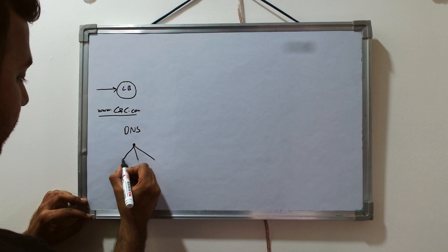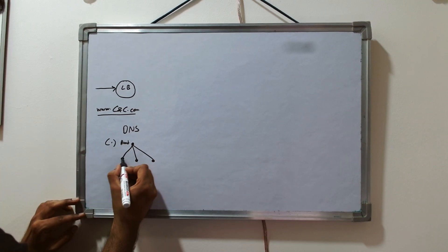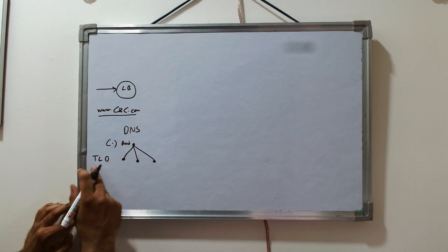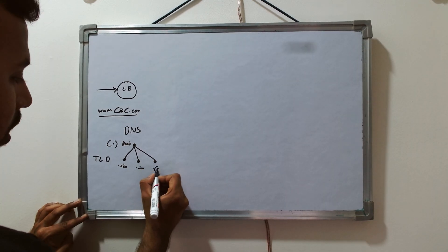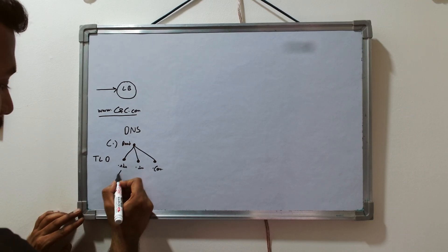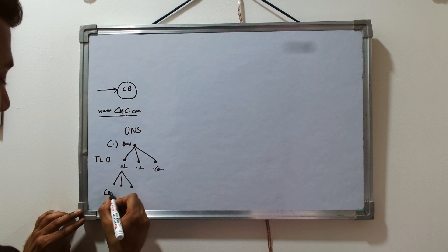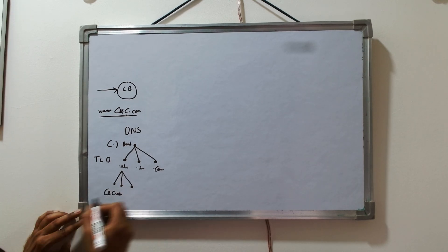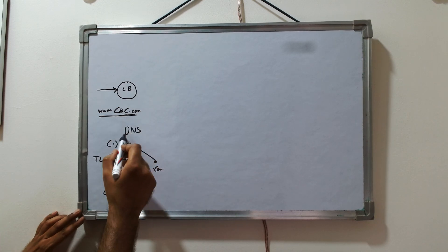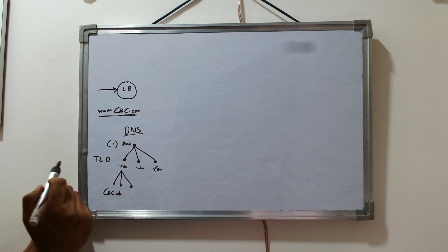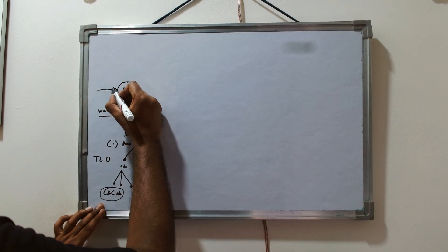DNS has multiple hierarchy levels where each node is known as a label. The first is the root, represented as a dot. The second level is the TLD — Top Level Domain — which includes servers like .edu, .in, and .com. After that comes the authoritative domain, for example conceptencoding.edu. The request goes through this hierarchy and the authoritative DNS system provides an IP address.